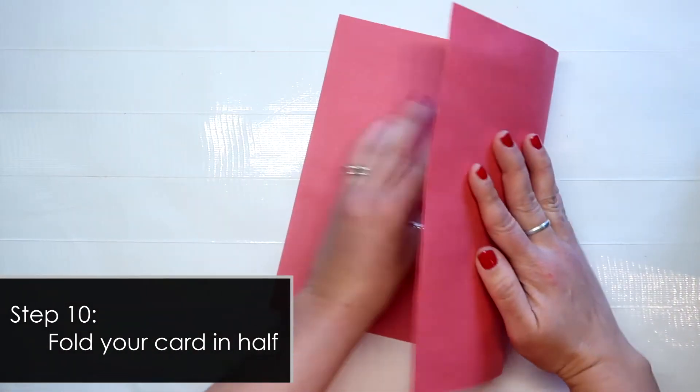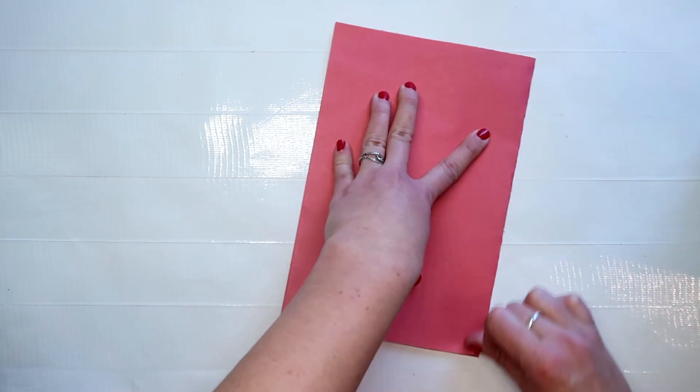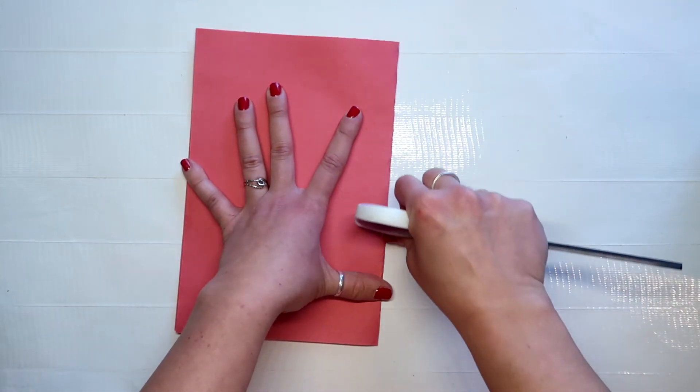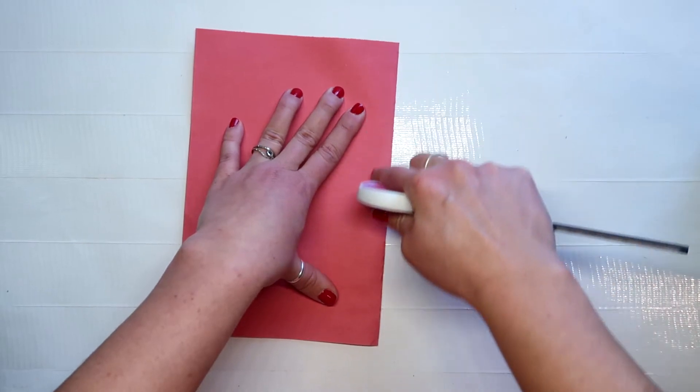First thing we need to do is to fold this in half. So again, I'm going to use my scissors to make a nice crisp line.